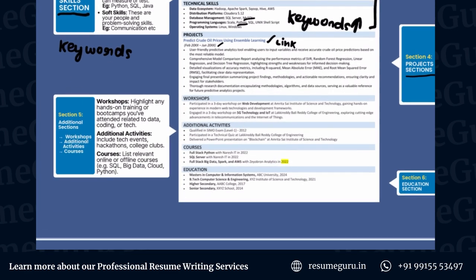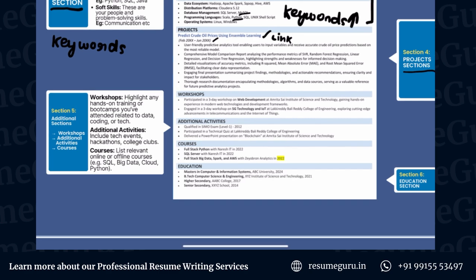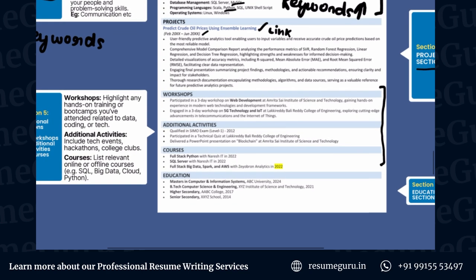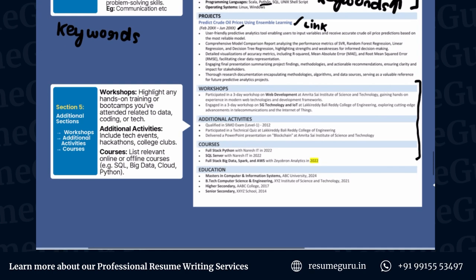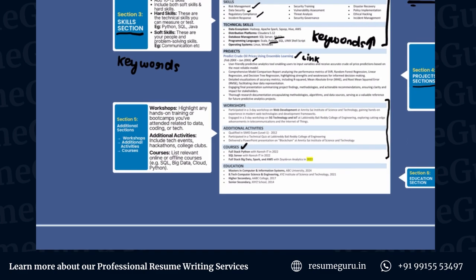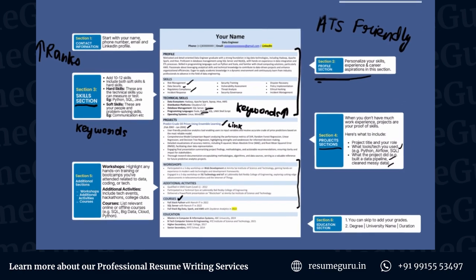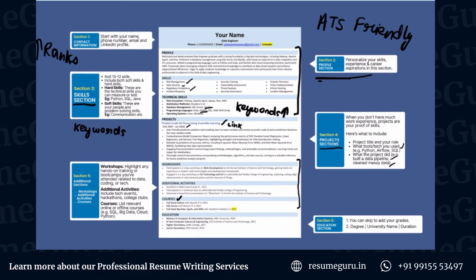Next up are the additional information sections — these are kind of bonus sections, mostly required for freshers since they don't have a lot of work experience. In the workshops section, you can highlight any hands-on training or boot camps you've attended related to data or coding. In additional activities, you can include hackathons, college clubs, and tech events. And in courses, you can show what skill sets you have certifications for — which is great to reiterate your expertise, since data engineering is very hard-skill oriented.